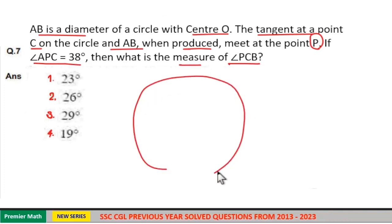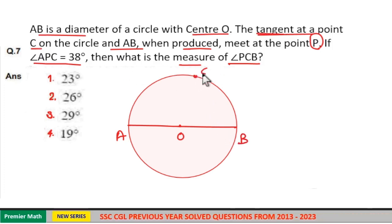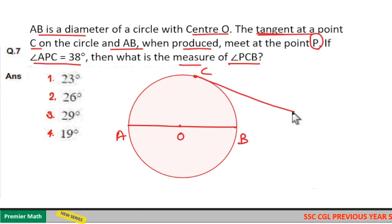Here this is the circle with center O and AB is diameter. Now tangent at point C. This is point C and tangent at point C and AB when produced meet at point P.